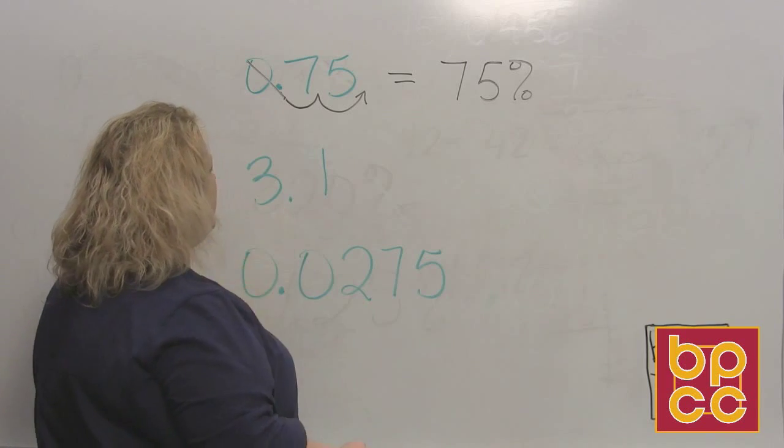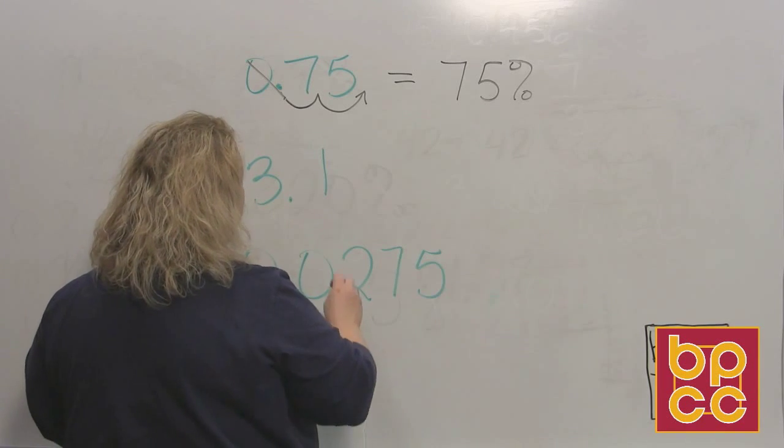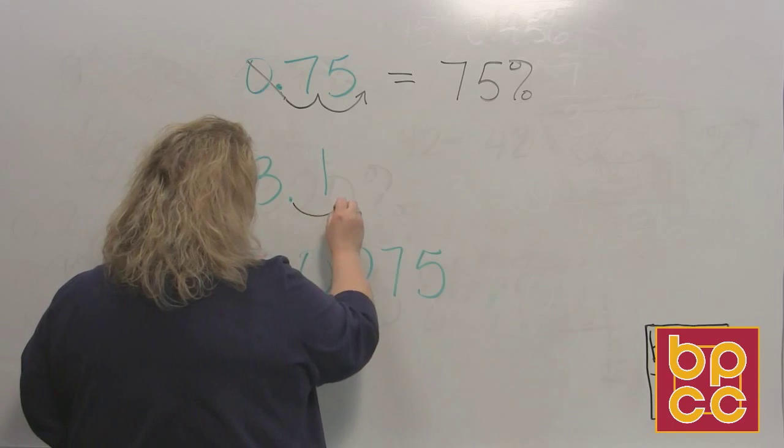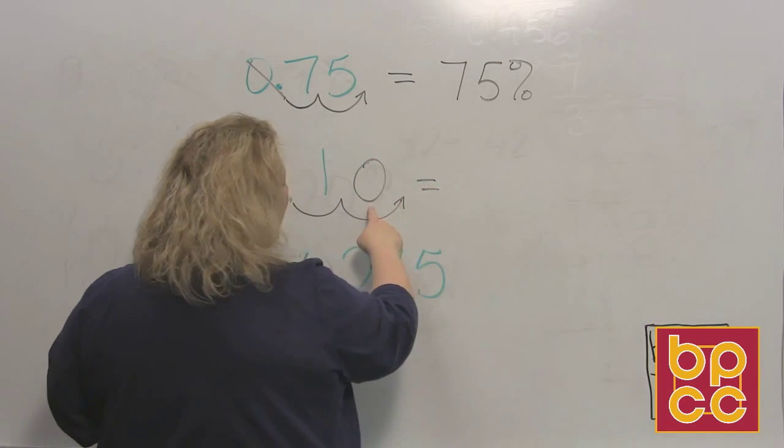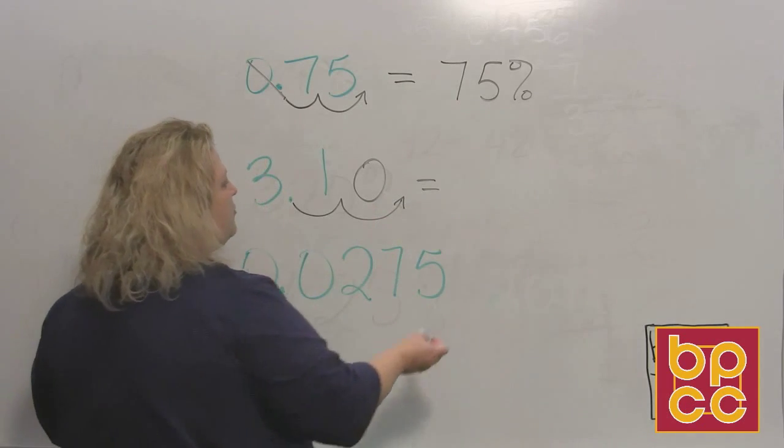The next one, I have 3.1, which is three and one-tenth. So, I move it two places to the right. And that means I had to add a zero because I needed an extra space. So, that's 310%.